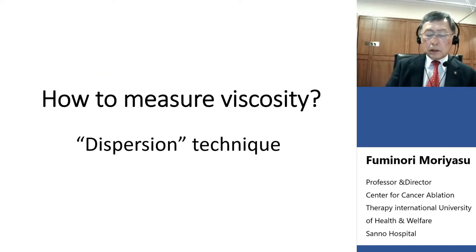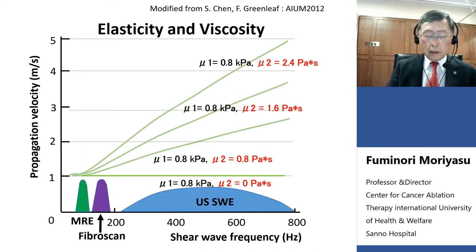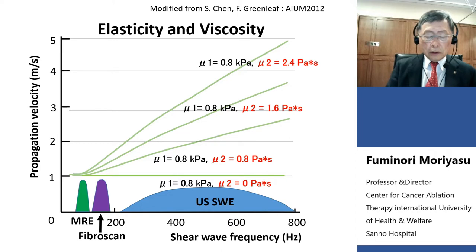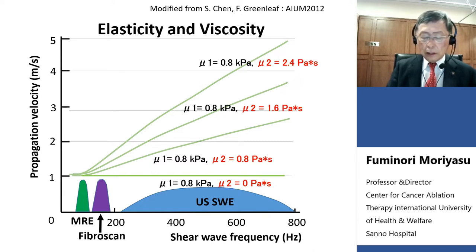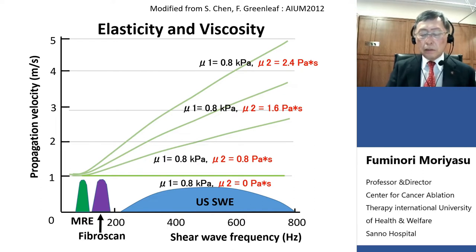How do we measure viscosity using the dispersion technique? This graph shows the relationship between elasticity and viscosity. The horizontal axis indicates the frequency of the shear wave, and the vertical axis indicates shear wave velocity. Shear wave velocity is dependent on viscosity and not on elasticity. Therefore, by using slope measurement, we can obtain the viscosity of the liver.